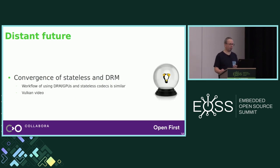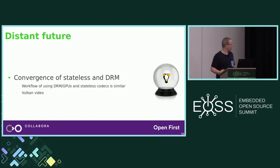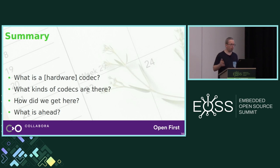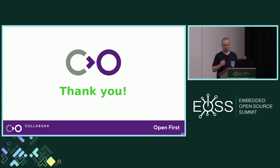In the very distant future: convergence of stateless codecs and DRM. It turns out that the workflow of using GPUs in DRM is similar to the workflow of using stateless codecs in Video for Linux 2. So who knows — maybe in some distant future we will see stateless codecs migrating to DRM. There is also Vulkan Video, and we don't know how it will relate to future kernel APIs. In summary: you have learned what video codecs are, the categories of codecs, examples of codecs driven by upstream drivers, key points in codec support history in upstream Linux kernel, and some predictions about the future.